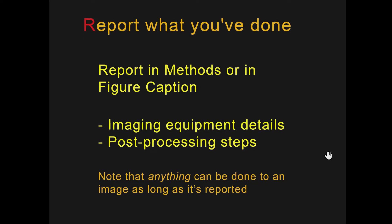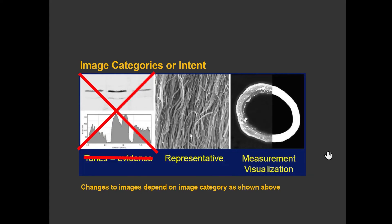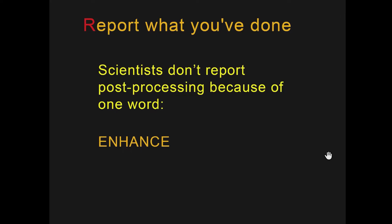Here's the most critical piece of RARA: report what you've done. You report this in the methods or in the figure captions. You need imaging equipment details and post-processing steps. Note that anything can be done to an image as long as it's reported. In this part of the talk, we're not going to address images intended for measurement of densities or intensities. Instead, we'll be talking about representative images and images meant for visualization.